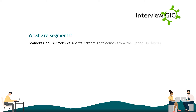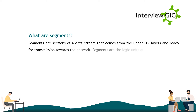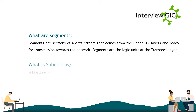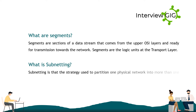What are segments? Segments are sections of a data stream that come from the upper layers and are ready for transmission towards the network. Segments are the logical units at the transport layer. What is subnetting? Subnetting is the strategy used to partition one physical network into more than one smaller logical subnetwork, or subnet.